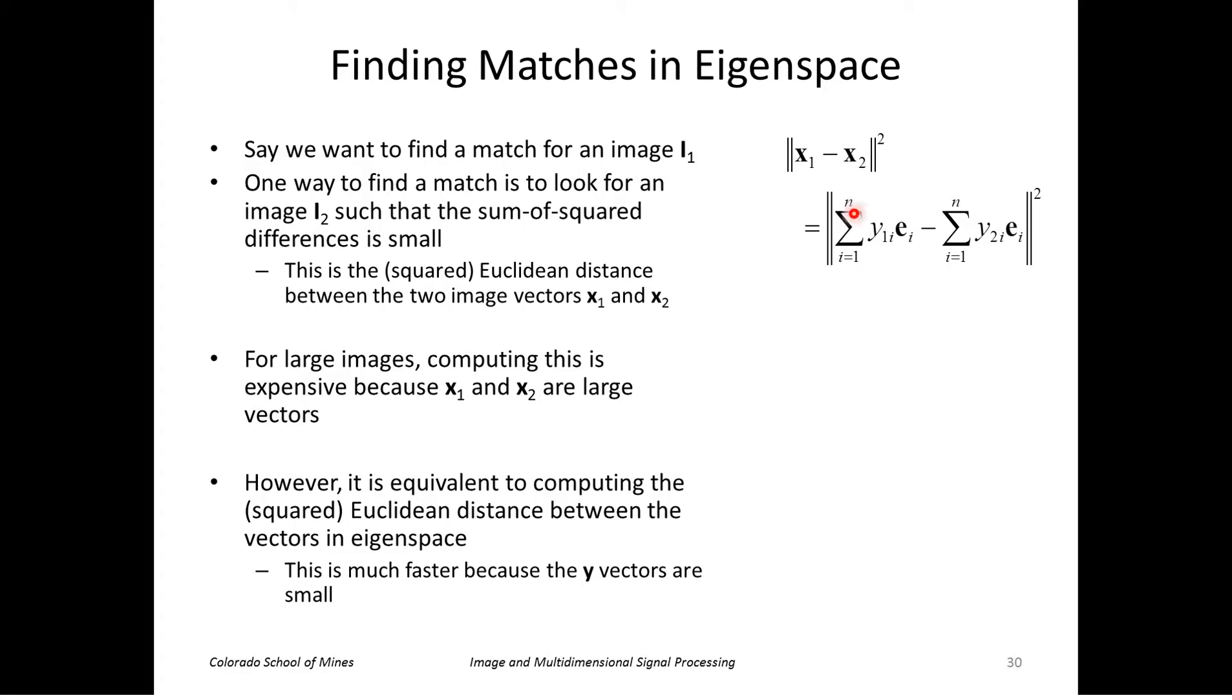So to see how that works, x1 is just a sum of eigenimages, so it is a linear combination of eigenimages from 1 to n, and I have coefficients y1, similarly for x2. And of course I keep only the top k principal components, so this is an approximation to this difference here. Then I'll group the eigenvectors e, and so I just have a sum of y1 minus y2 times the corresponding eigenvector, sum all that up and take the square.